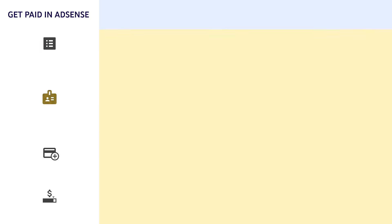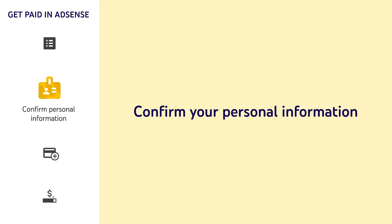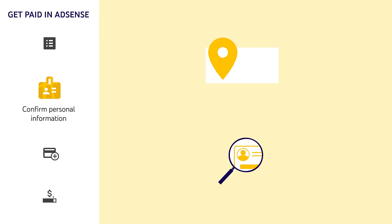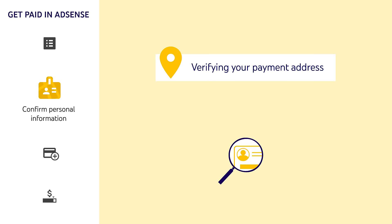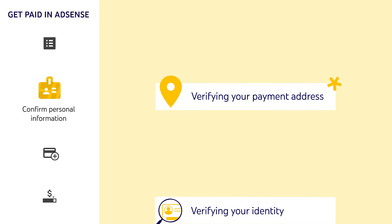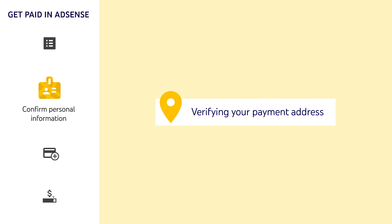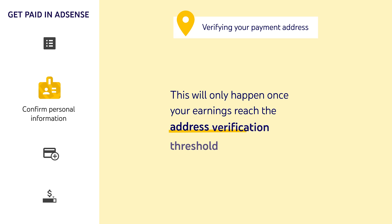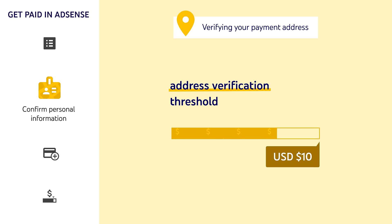Next, you'll need to confirm your personal information. Confirming your personal information consists of two potential parts: verifying your payment address, which is required for everyone, and verifying your identity, which is only required in some instances. Let's first go through verifying your payment address. This will only happen once your earnings reach the address verification threshold, which is 10 US dollars, or whatever the equivalent is in your currency.